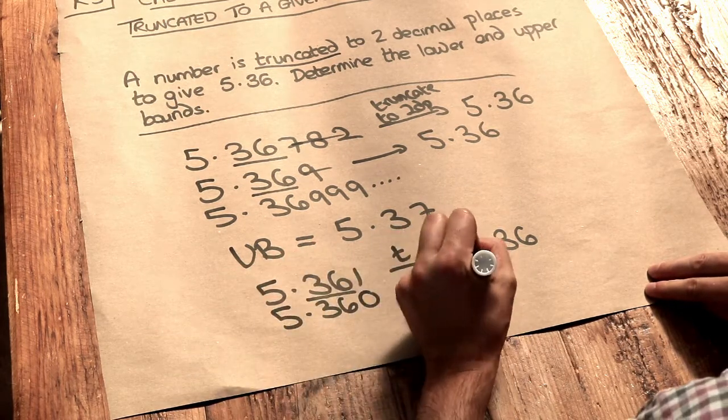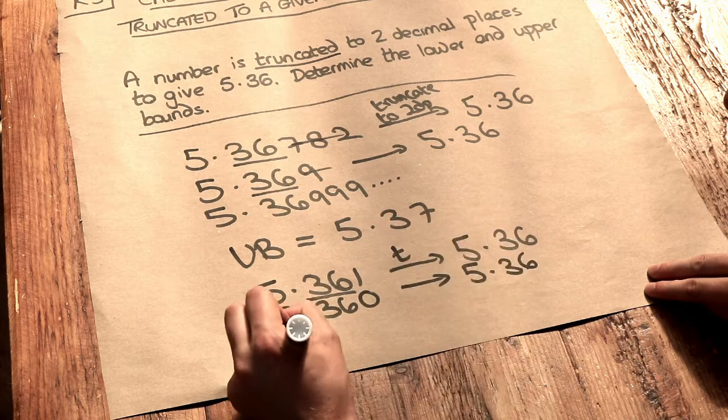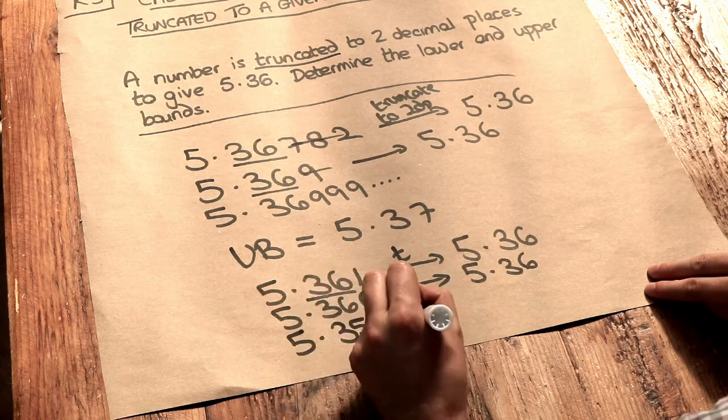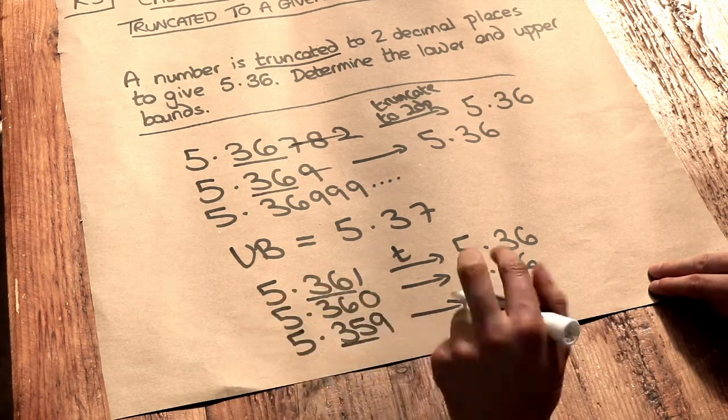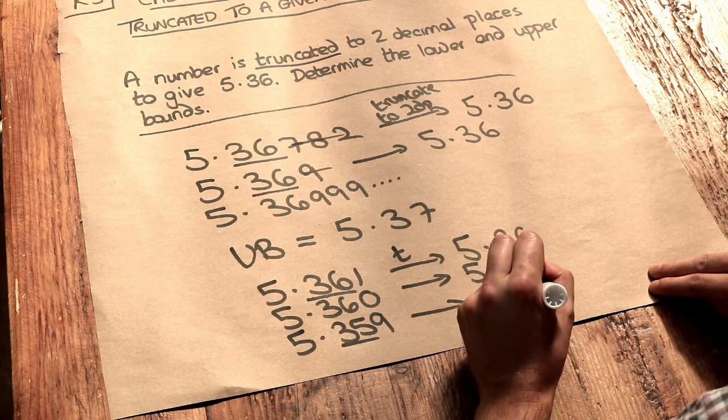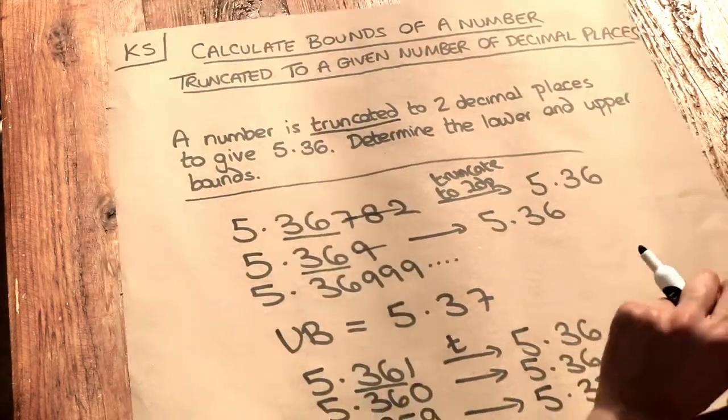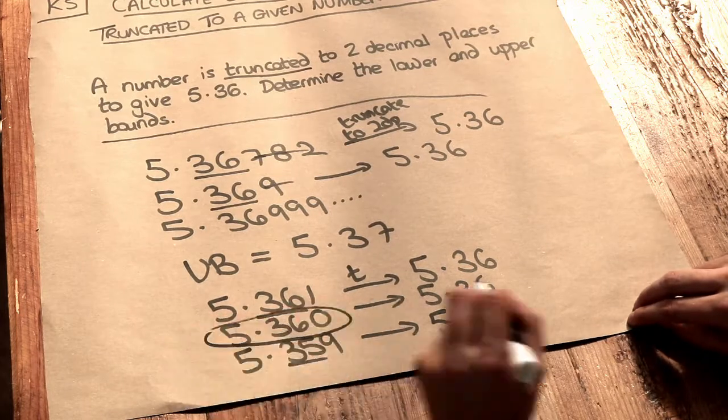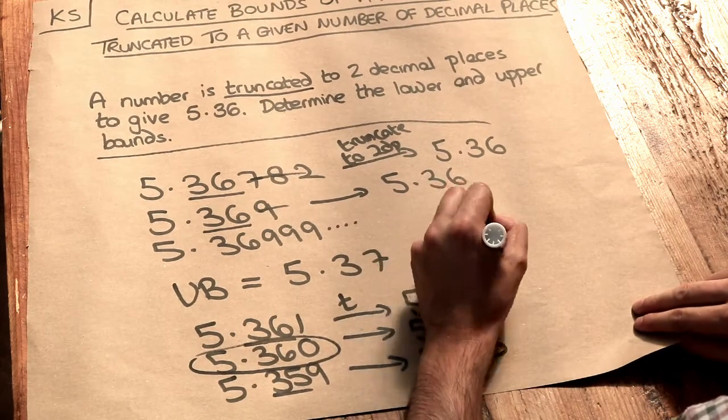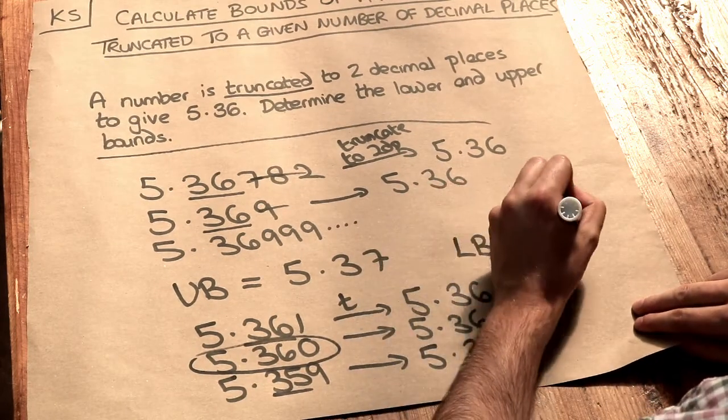But anything lower, like 5.359 for example, when truncated to two decimal places, we would discard the 9, giving 5.35. So that's not 5.36, so that's too low. So it seems to be that this number here is the lower bound. So the lower bound would be 5.36.